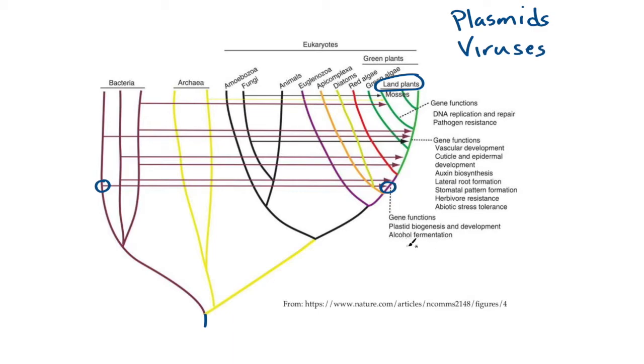So this first one included the ability to make plastids and ferment alcohol, the first two here. And then the red algae diverged from the ancestors of the green algae, mosses, and land plants. And the green algae diverged.